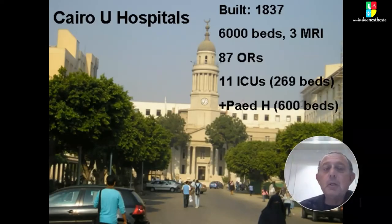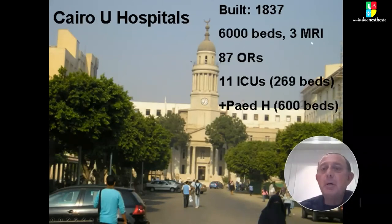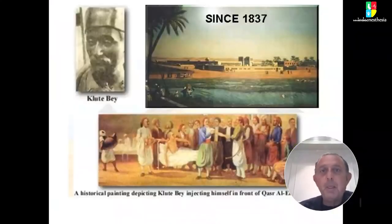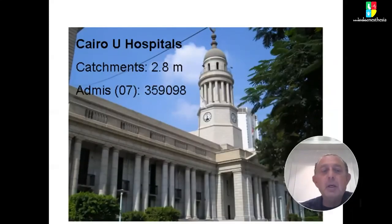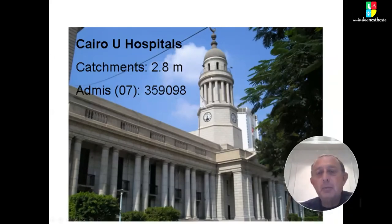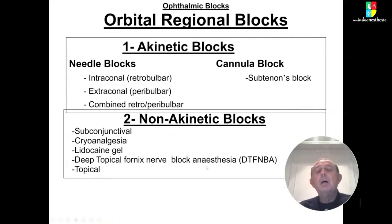I work at Cairo University Hospital, built in 1837, with 6,000 beds, three MRIs, and 11 ICUs. We have a dedicated pediatric hospital. Our catchment area is about 2.8 million people. Today I will talk about orbital regional blocks.